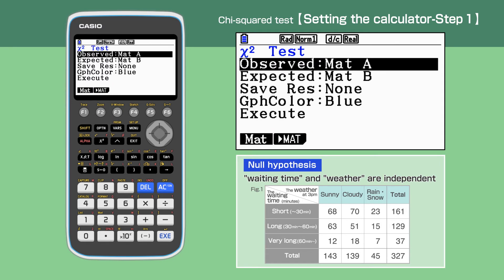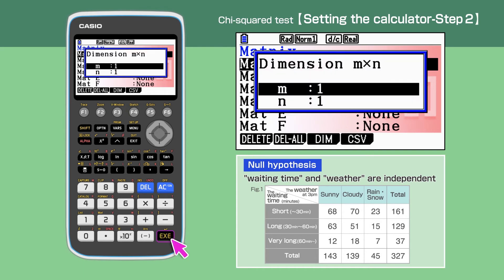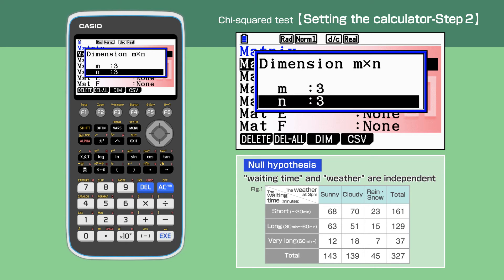The chi-squared test screen is shown. Make sure observed is highlighted, then select F2. The screen will switch to the matrix setting screen. Highlight Mat A, then press execute to access Mat A dimension. Enter 3 for m and 3 for n. M is the number of columns and n is rows. Press execute.